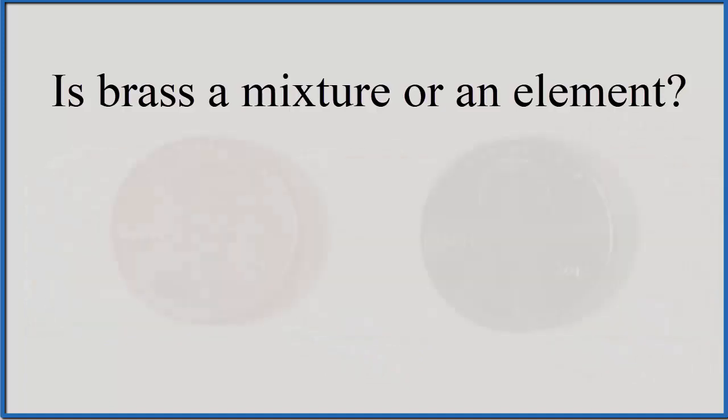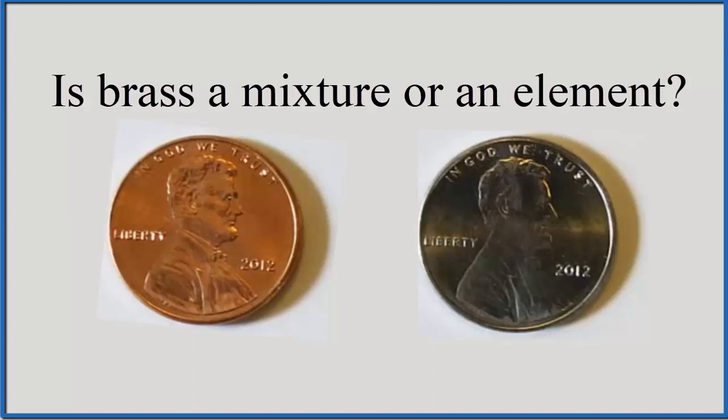So you won't find brass on the periodic table. Brass is not an element. It's a mixture of two elements. Those elements, copper and zinc.